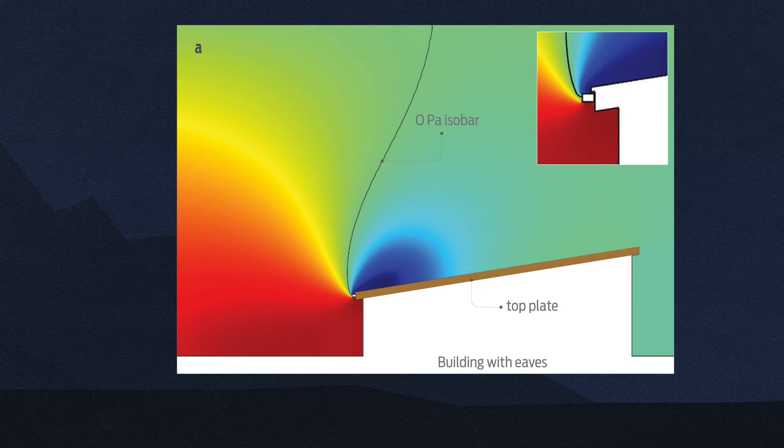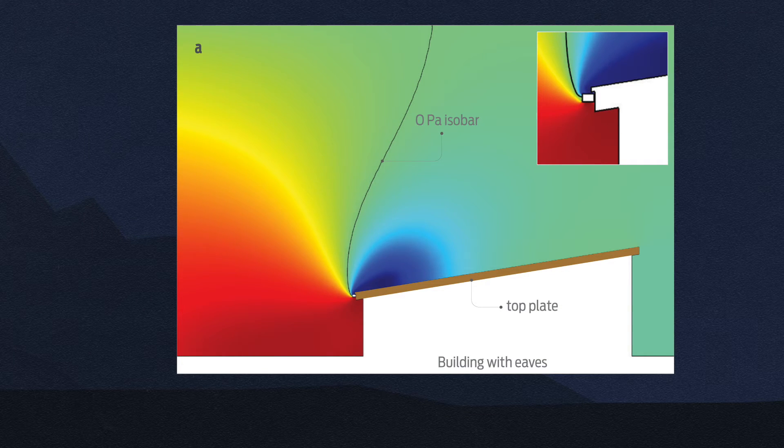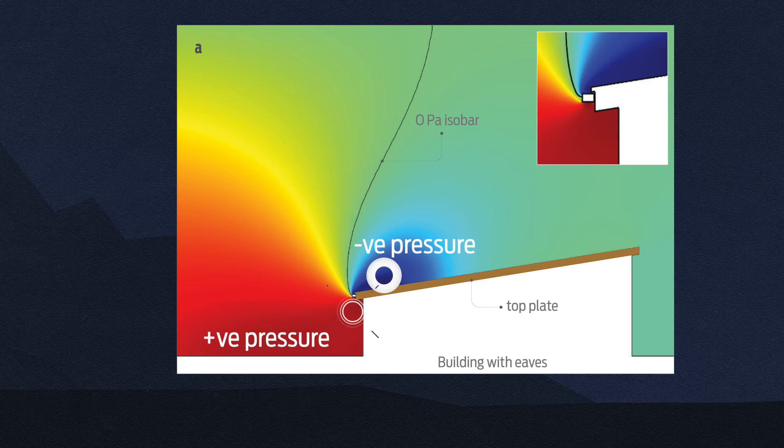The results of the simulation show the location of the highest wind pressure, ranging from negative pressure in blue to positive pressure in red.